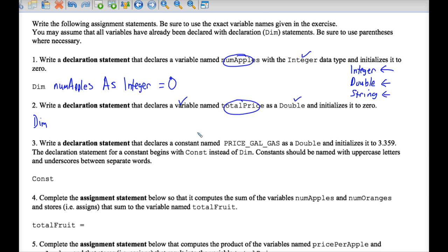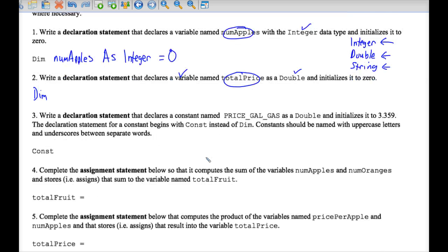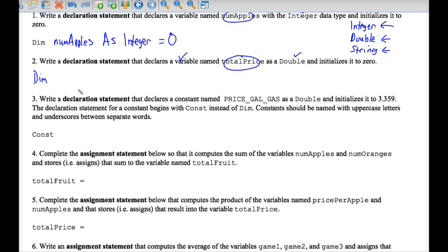Number two is very similar. You can do that on your own. And number three is very similar. It's just that we start with const instead of dim. And keep in mind, in number three, we're setting the constant equal to 3.359 instead of zero.